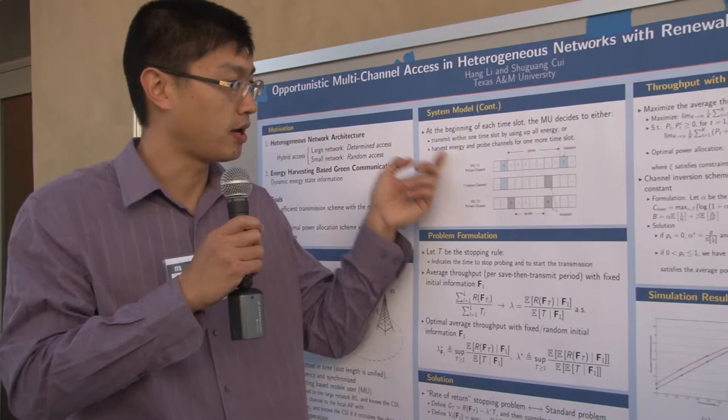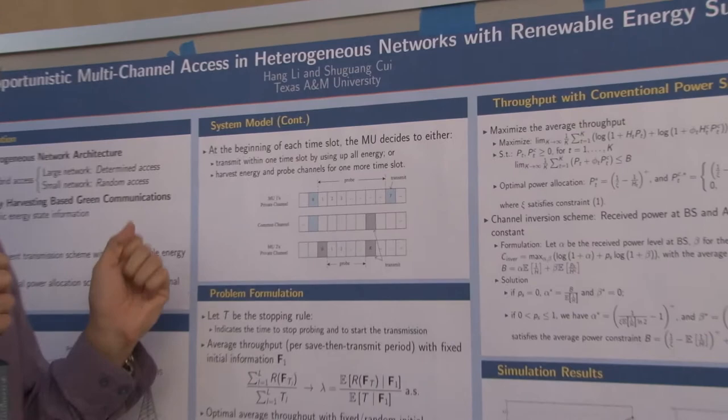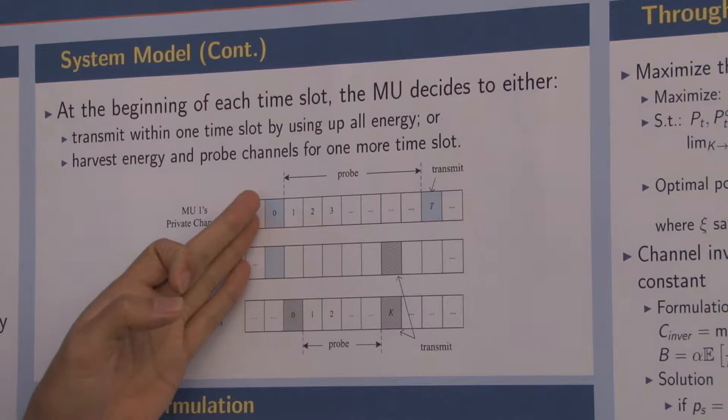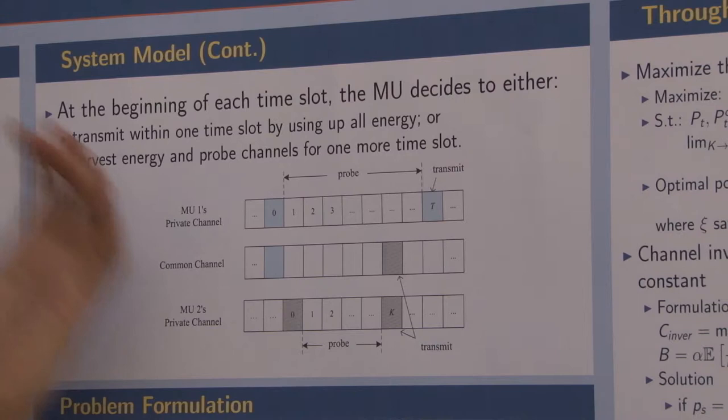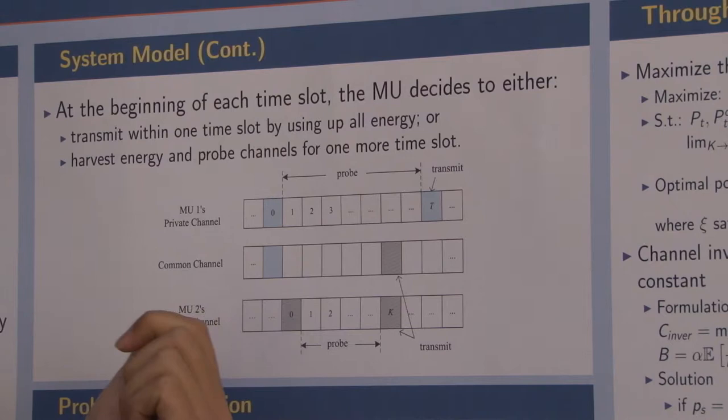Moreover, each user will work in this certain operation scheme. For example, for user one, it will first probe the channel and the energy status, and all of this information will determine the instantaneous transmission rate.